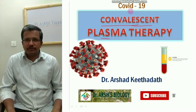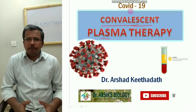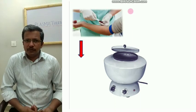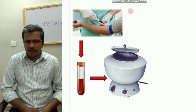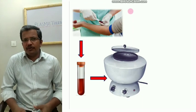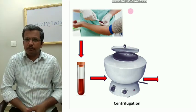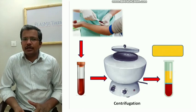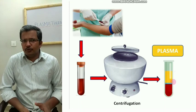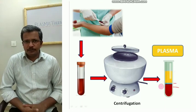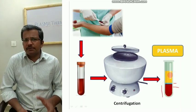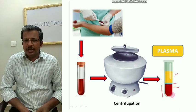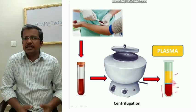In order to understand plasma therapy, we should first know about blood components. If you collect blood from your body and transfer it into a centrifuge tube, then go for centrifugation at around 3000 rpm for five minutes, the entire blood components will get separated. On the top layer of the test tube you can find plasma, a pale yellow colored fluid, and below that you can find WBC, platelets, and RBC.